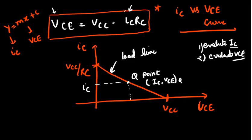And first then, once we evaluate IC, what we can do, we can just put this value of IC here and we will get the corresponding value of VC that would be our Q point.